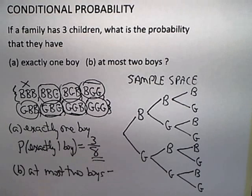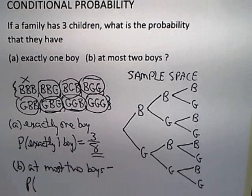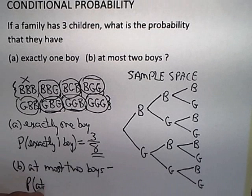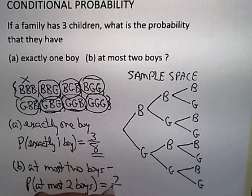In other words, the probability is seven out of eight. So the probability of at most two boys would be seven-eighths.